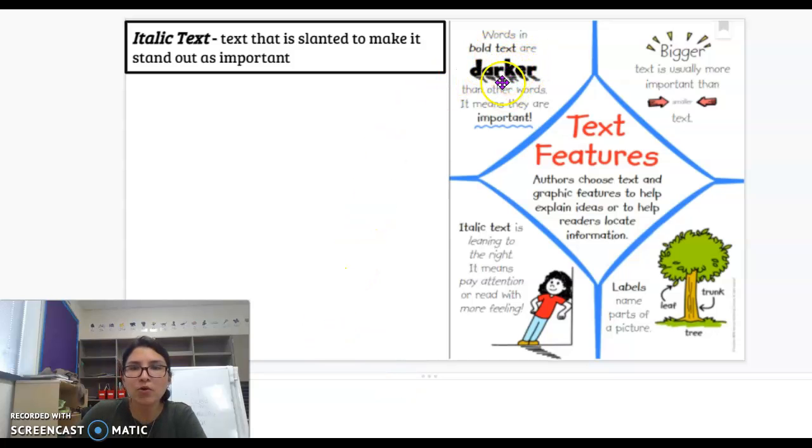Words in bold text are darker than other words. It means they are important. Do you see the example right here? See how this is darker? They're meant to stand out. Let us, the reader, know that word's important. Also, when you see bold text, that lets us know that most of the time you can find that bold text in the back of the book, in the glossary, and find out what the meaning or the definition of that word is.